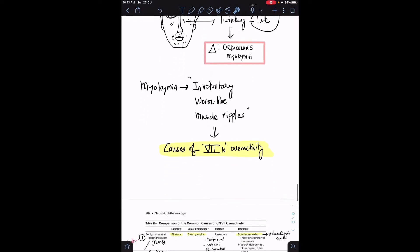There are basically four conditions which can cause seventh nerve overactivity. It's a very important table from AAO. First is benign essential blepharospasm, second is hemifacial spasm, third is eyelid myokymia which is our diagnosis, and fourth is facial myokymia.